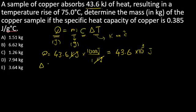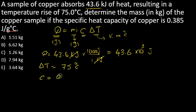The temperature rise ΔT is 75 degrees — no conversion needed there. The specific heat capacity is given as 0.385, with units of Joules per gram.